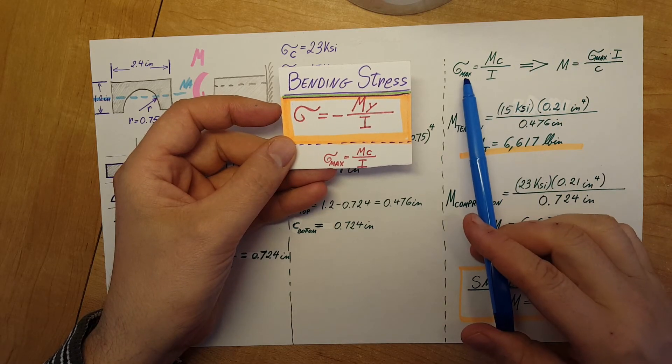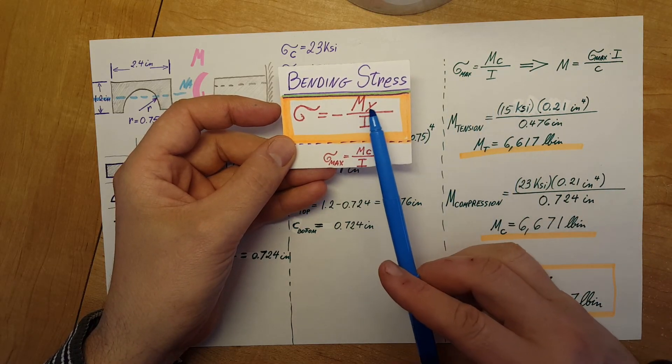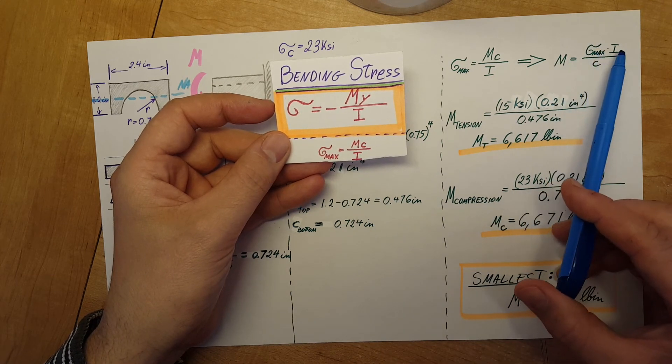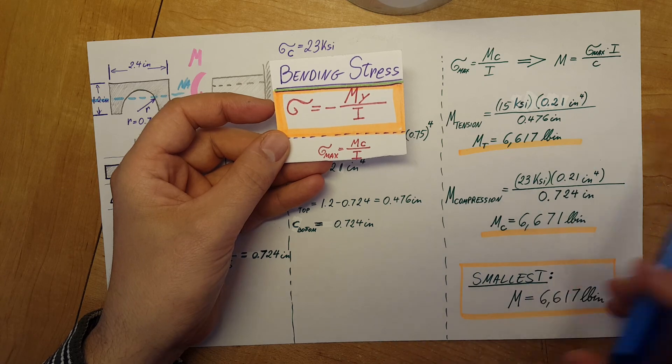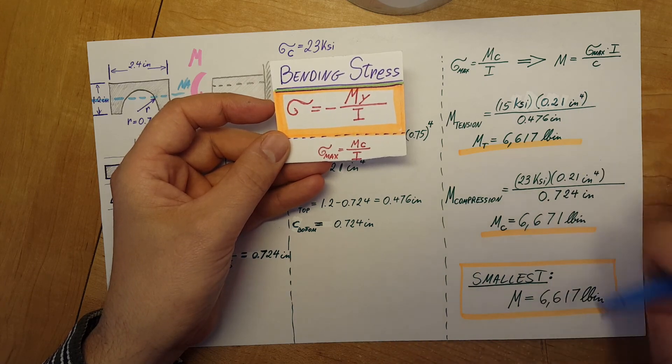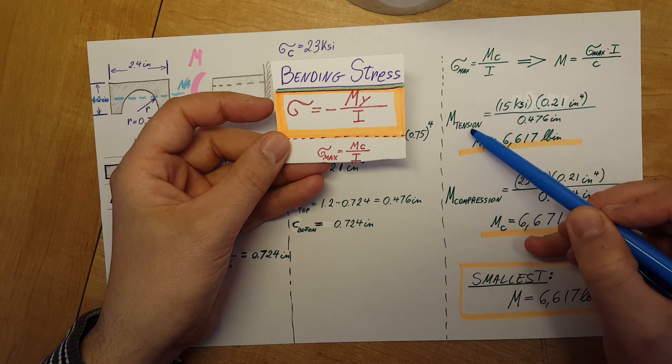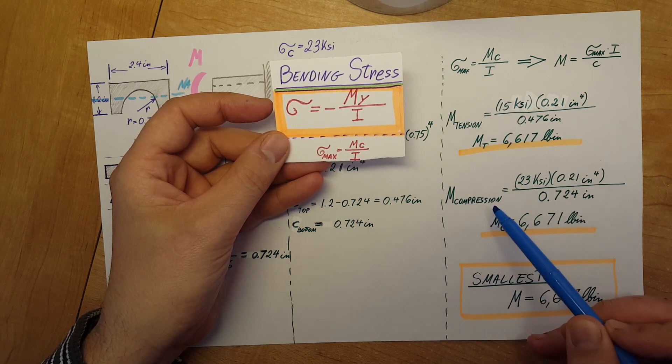Here's my stress formula and I'm going to solve for M. M equals the stress times I over C. Now we're going to split our problem in two areas: the moment for tension and the moment for compression.